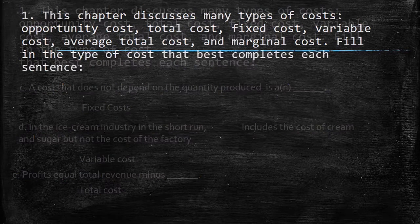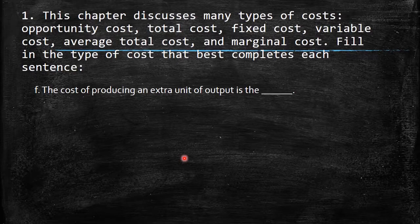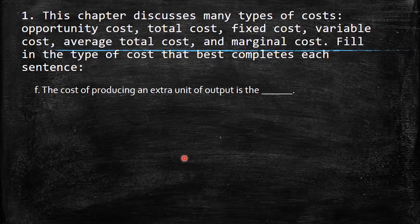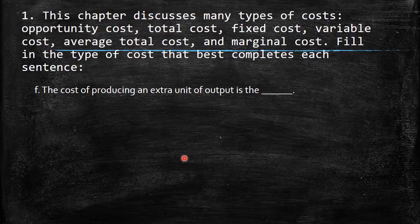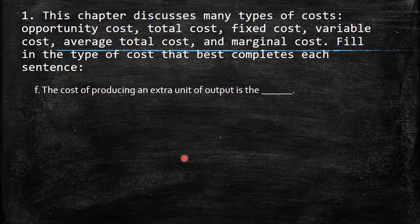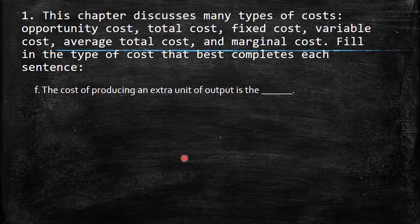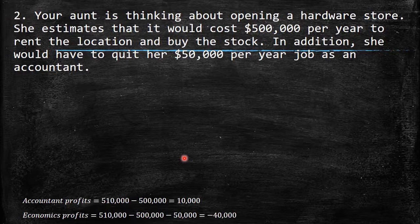And the cost of producing an extra unit of output — every time we talk about a change when something changes by one unit, that's marginal. So the marginal cost is the cost of producing one additional unit, just as marginal revenue is the additional revenue from selling one additional unit.